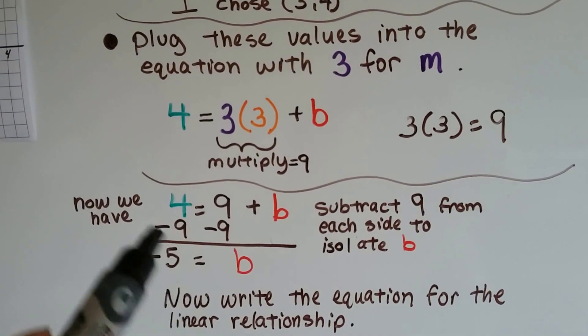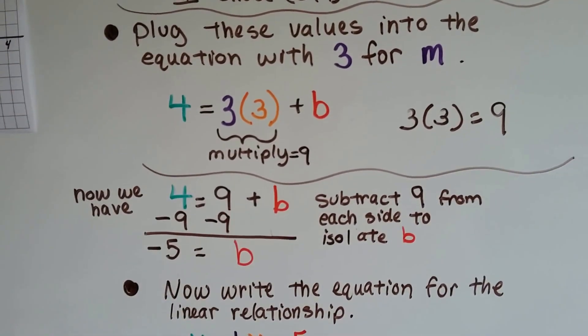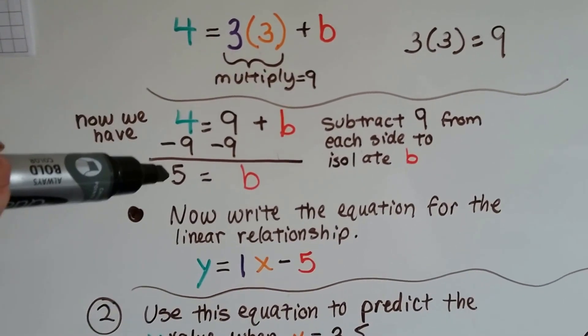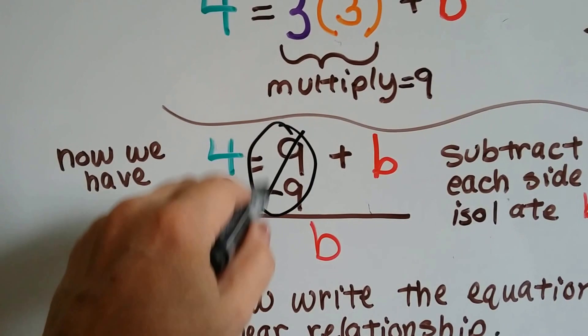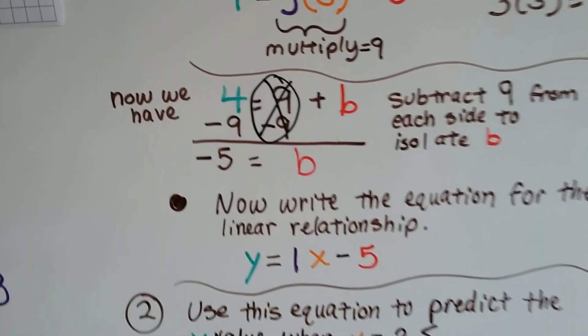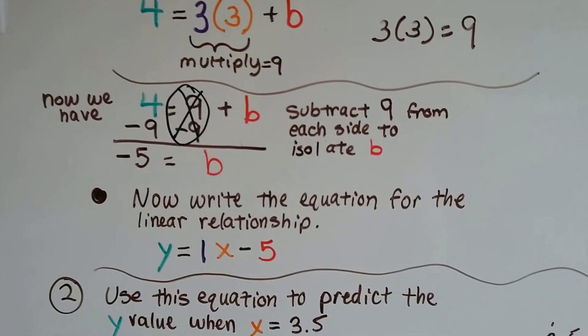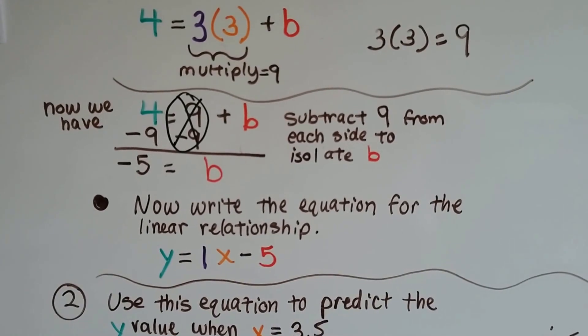So now we have 4 equals 9 plus b. We subtract 9 from each side of the equation to isolate b. And 4 take away 9 is negative 5. This 9 take away 9 cancels each other out. They make a zero pair. And now we have negative 5 equals b. Now we can write the equation for that linear relationship.